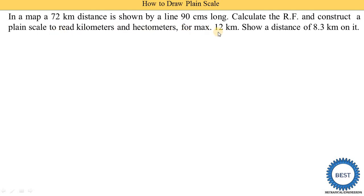The plane scale has two units: kilometers and hectometers. We need to construct the scale for a maximum distance of 12 kilometers, and on that scale we need to show a distance of 8.3 kilometers.